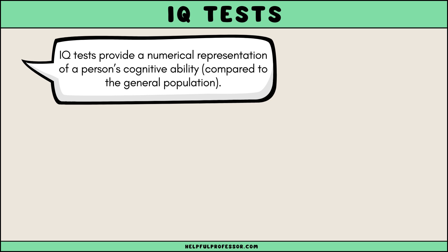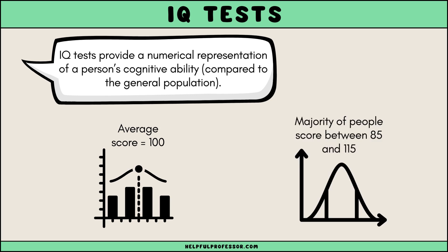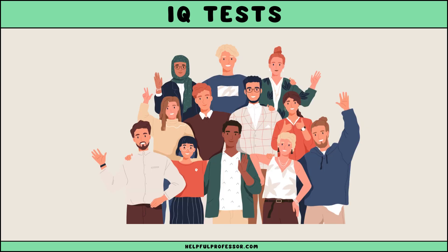One of the core aspects of the IQ test is its ability to provide a numerical representation of a person's cognitive ability compared to the general population. Scores are usually standardized with an average score set at 100 and the majority of people scoring between 85 and 115. This standardization means that an individual's score reflects where they stand in relation to a typical norm group.